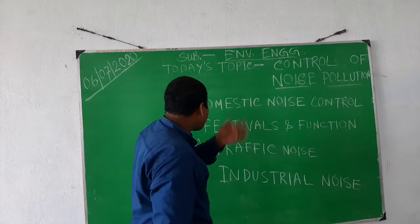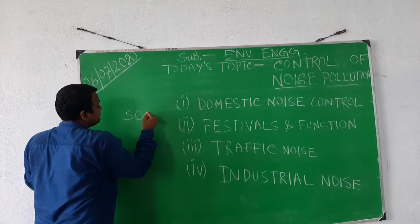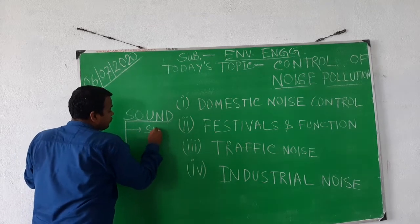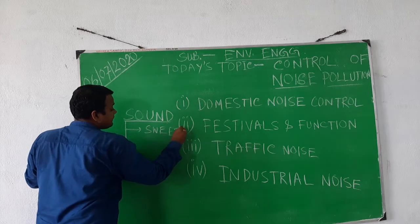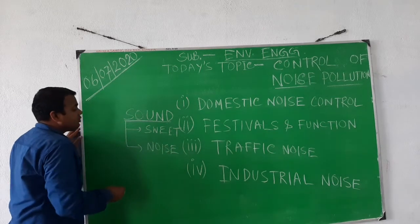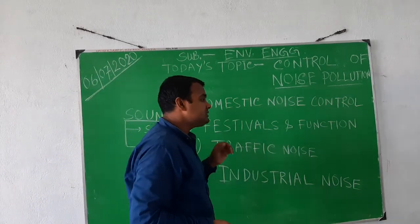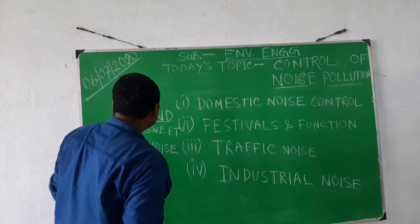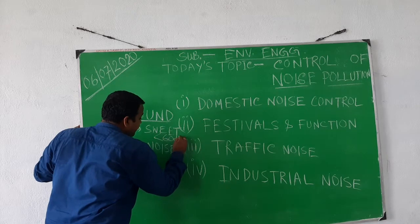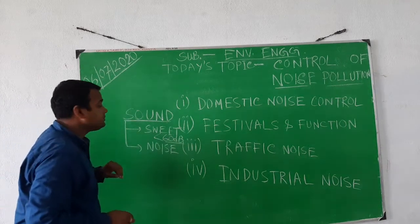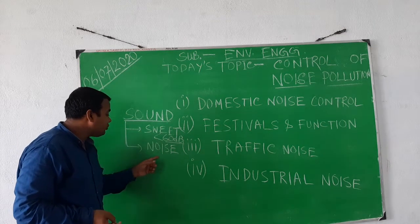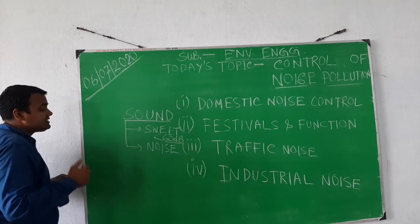Sound is divided into two sections. One is sweet sound — also called pleasant sound — and the other is noise. Sweet sound is what we listen to comfortably, less than 60 decibels. This sound is called sweet sound and is comfortable to listen to.